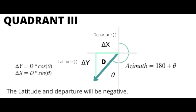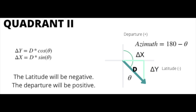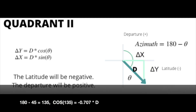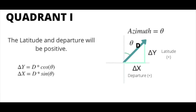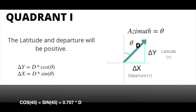People are often used to seeing delta X written in terms of cosine, but the departure delta X is actually written in terms of sine. As we go through the different quadrants, different components go negative. In quadrant two, cosine of 135 is negative 0.707, meaning the latitude delta Y is negative. Finally in quadrant one, both the latitude and departure are positive — cosine and sine of 45 both give 0.707.